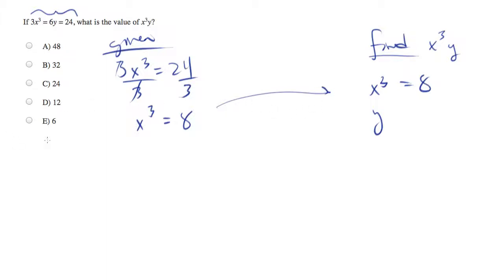Now let's work on the y. Well, we're told that 6y equals 24. Divide both sides by 6, and we find that y is equal to 4. So plug that in right here.